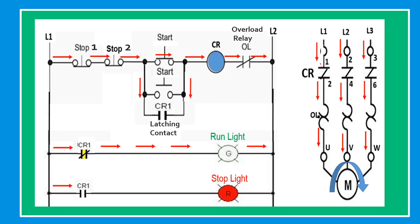When the push button is pressed, the current flows from line 1 through stop 1, stop 2 that is connected in series, through the start button that is connected in parallel, through magnetic coil CR, through overload relay contact and on to line 2. This energizes the control relay.